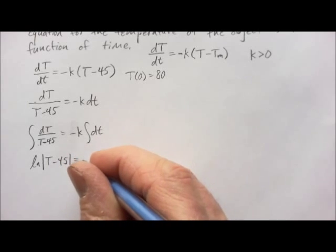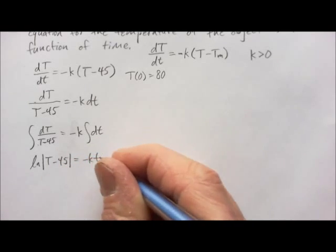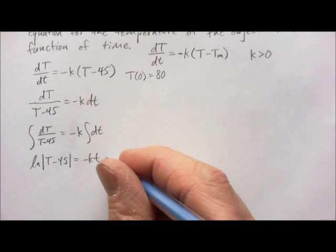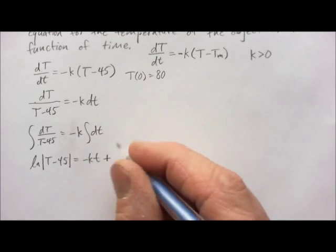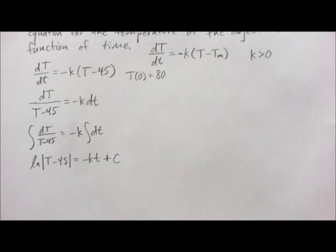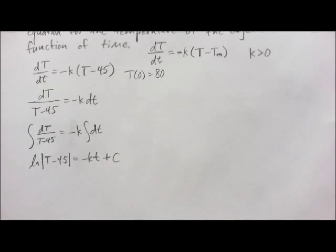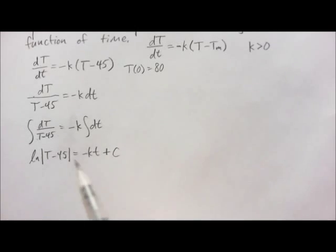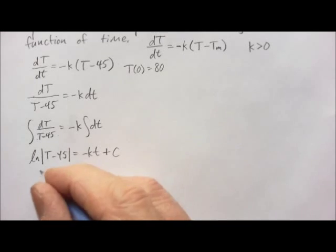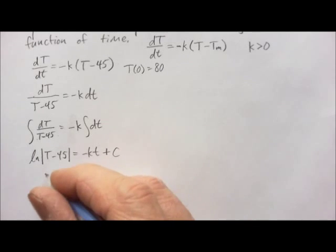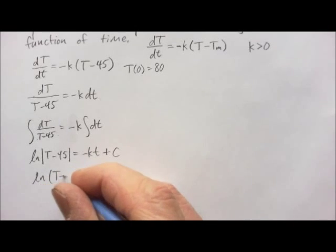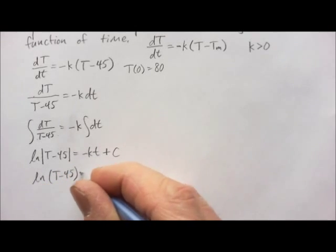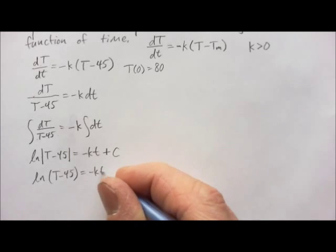this turns out to just be the natural log of the absolute value of T minus 45. And on the right side, we get negative KT. And we have a plus C on both sides, but as usual, we bring the constant from this side over here. So, we only need the constant on this side. Now, if we think about this a little bit, for our situation, capital T is always greater than 45 degrees. So, we don't need those absolute value signs.